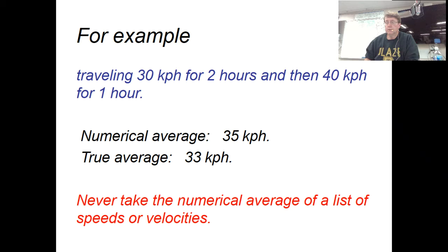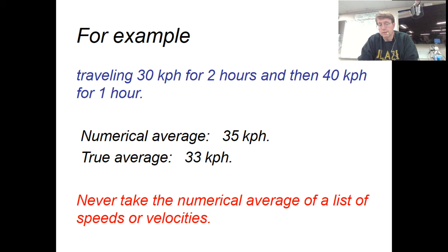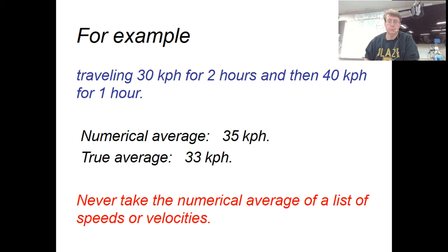Instead, figure out how far you traveled during each part. 30 km/h for two hours means 60 kilometers. Then 40 km/h for one hour is 40 kilometers. So 60 plus 40 is a total of 100 kilometers, divided by the total time of three hours, giving 33 kilometers per hour. That's the correct average. There will be an example of this on the test — you will be checked to see if you do it the right way.